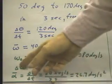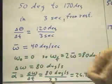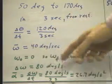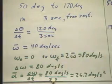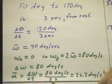So our delta omega would be 80 degrees per second, from omega naught zero to omega F 80 degrees per second. Our change is 80 degrees per second.